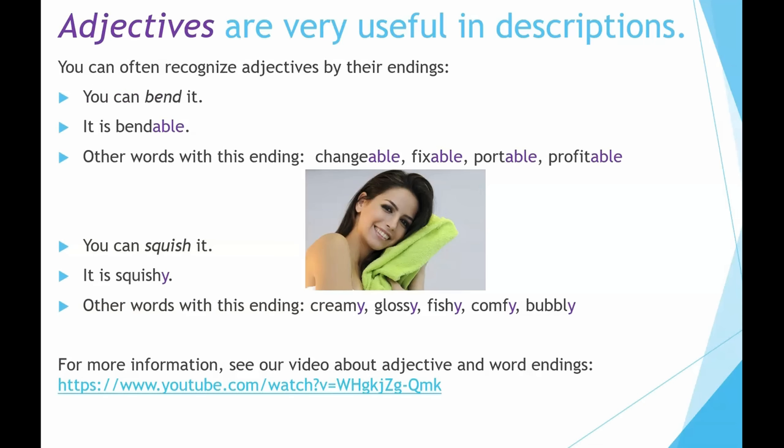Adjectives are very useful in descriptions. You can often recognize adjectives by their endings. For example, 'you can bend it' — it is bendable. Other words with this ending: changeable, fixable, portable, profitable. Another example: 'you can squish it' — squish means something like squeeze — it is squishy. You see the -y ending here. Other words with this ending are creamy, glossy, fishy, comfy, and bubbly.